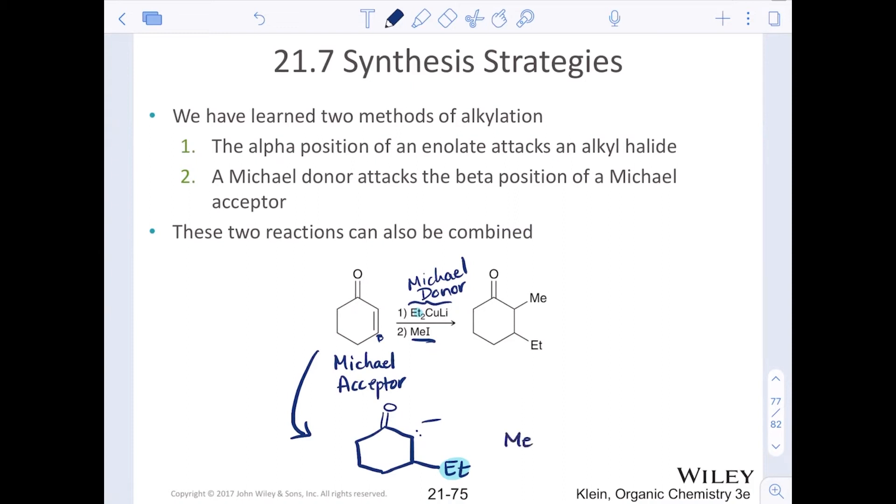We could follow that up with an SN2 reaction where the enolate then attacks the carbon of a methyl iodide, methyl halide, or a primary alkyl halide in an SN2 reaction. So it's kind of like this combination where we do the direct alkylation as well as Michael addition.